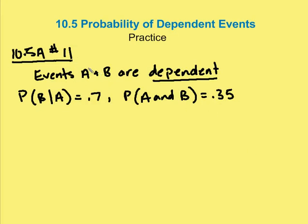In the next problem, we have events A and B. They're dependent, which means that they affect each other. And we're trying now to find the probability of A.